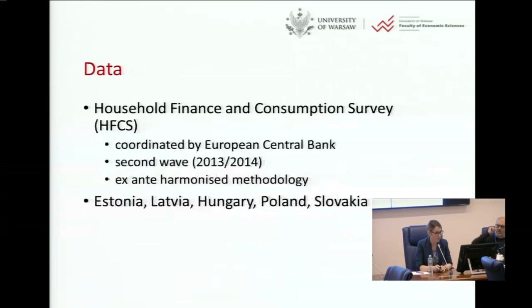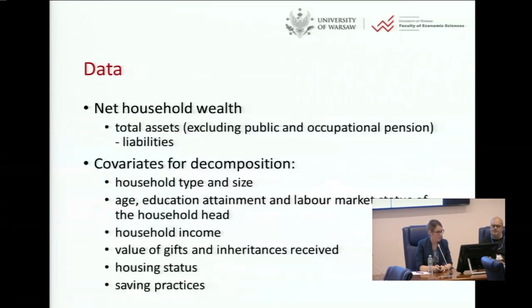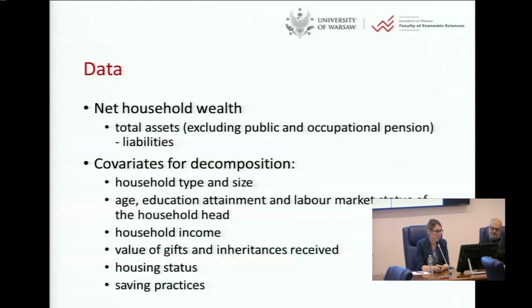Our variable of interest is net household wealth, defined as total assets excluding public and occupational pensions minus liabilities. Covariates for the composition are pretty standard: household type and size, age, education attainment, labour market status of the household head, household income, value of gifts and inheritances received, housing status — which will become important — and saving practices.